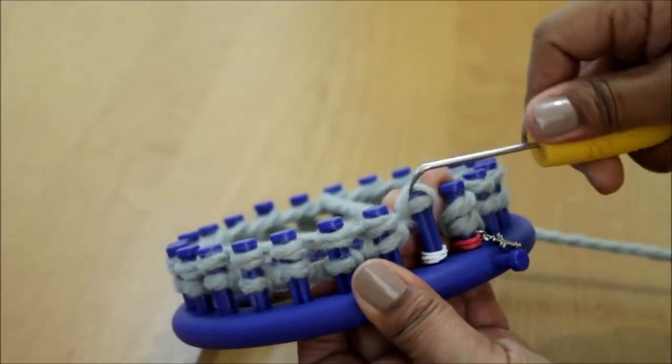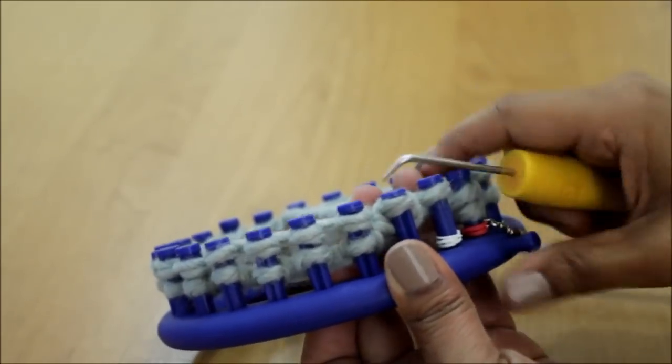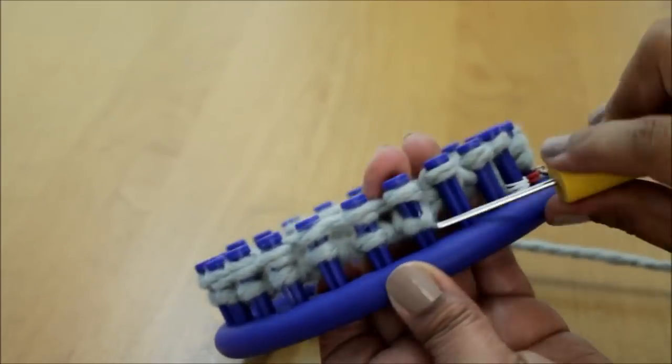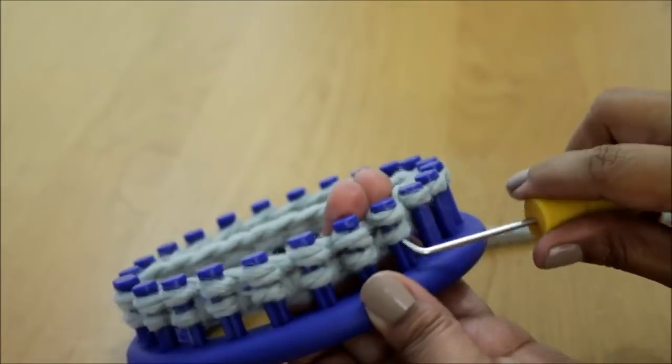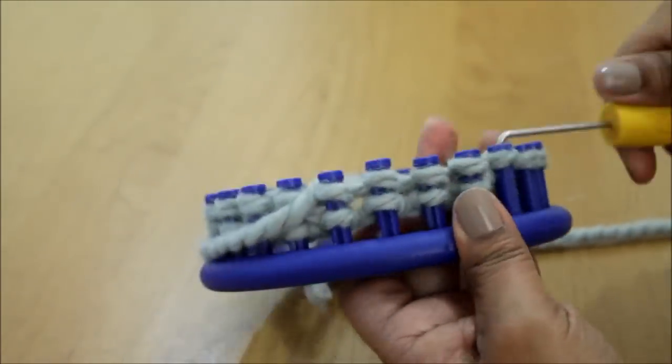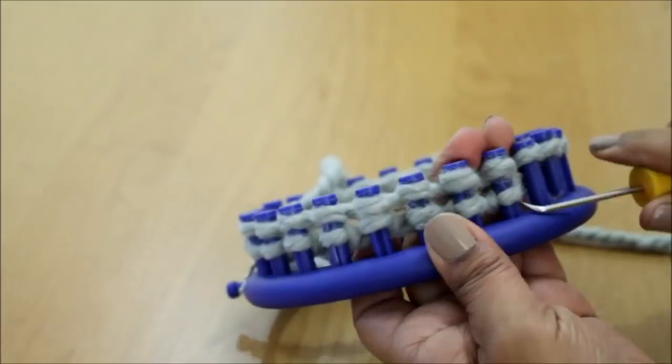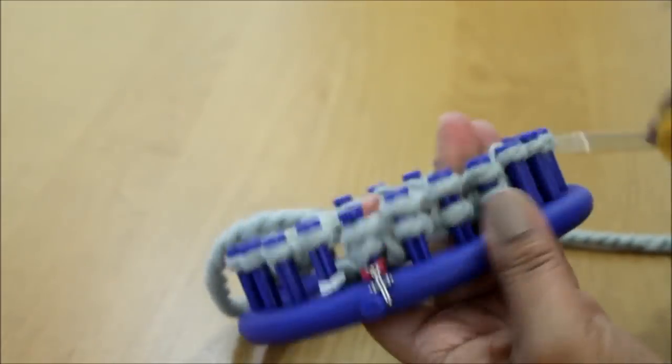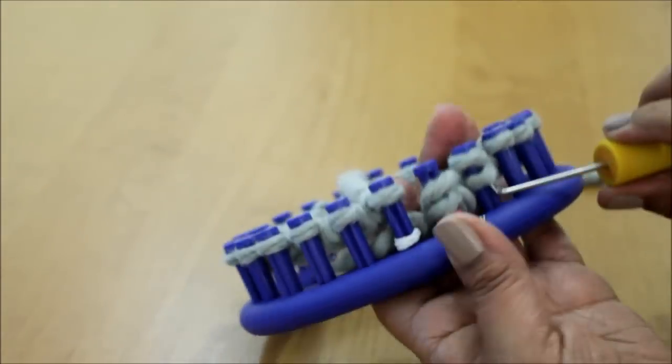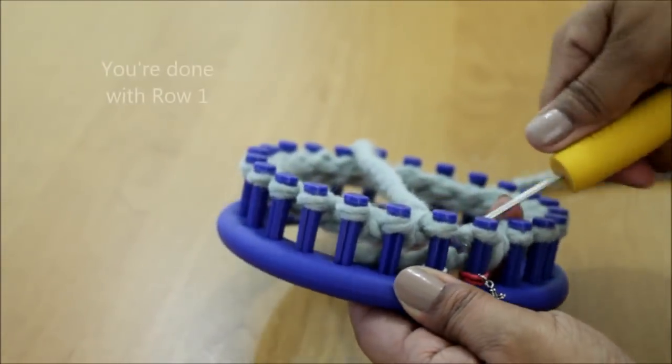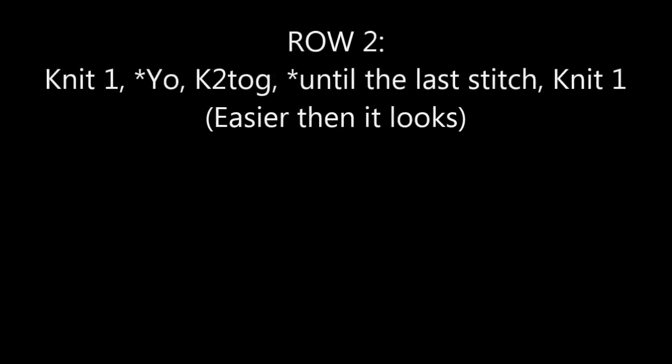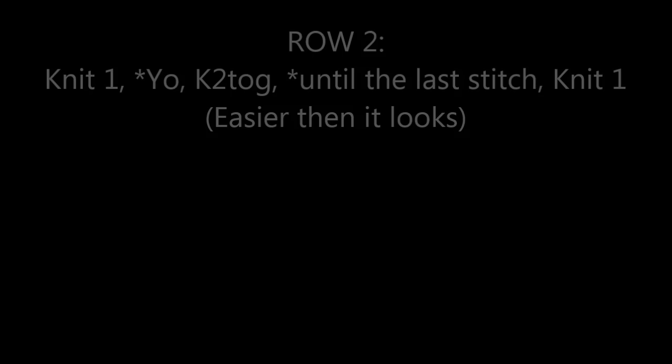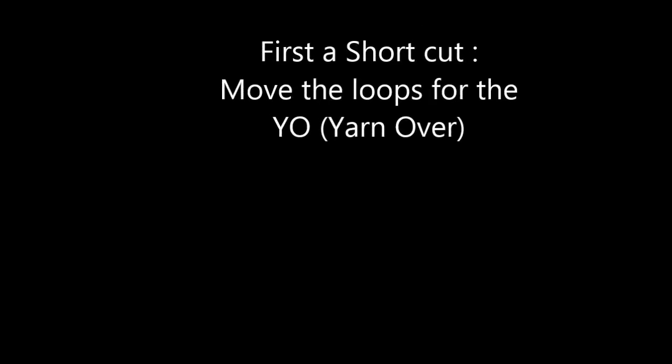Then just knit off. Once you knit off that last peg, you're done with row one and you're ready for row two which is a knit one, yarn over, knit two together to the last peg. But I do want to show you a shortcut for the yarn overs.